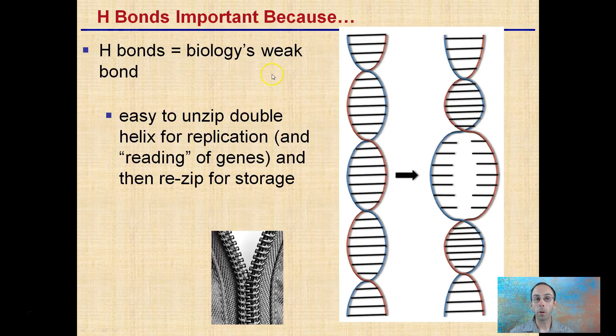Now, these hydrogen bonds are important. While hydrogen bonds are biology's weak bonds, it's a good thing that they're weak. It makes it very easy to unzip the double helix for replication, and also for reading different genes that we want to replicate. But then, it allows for an easy rezip to store and keep our double helix, our DNA structure, together.